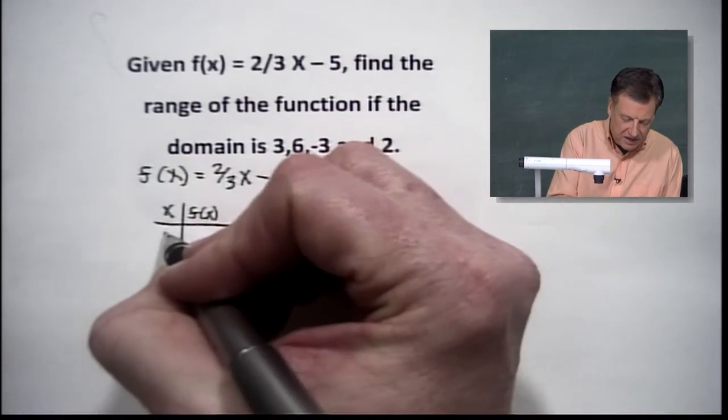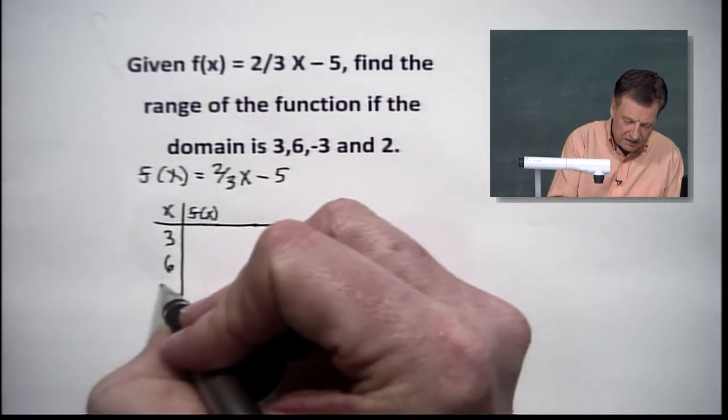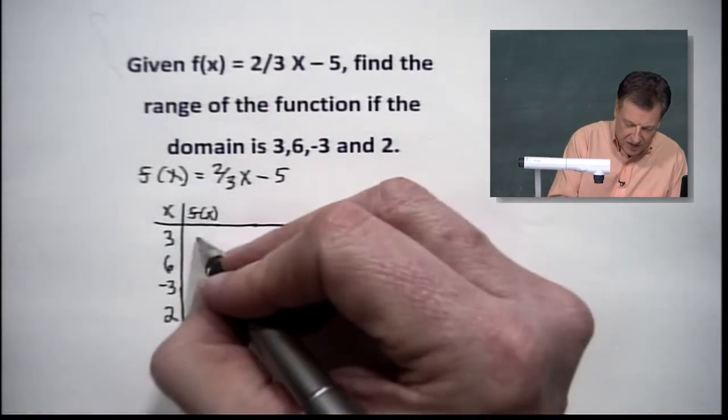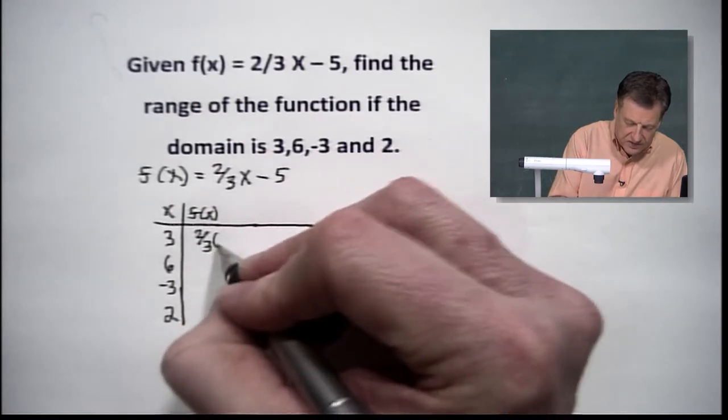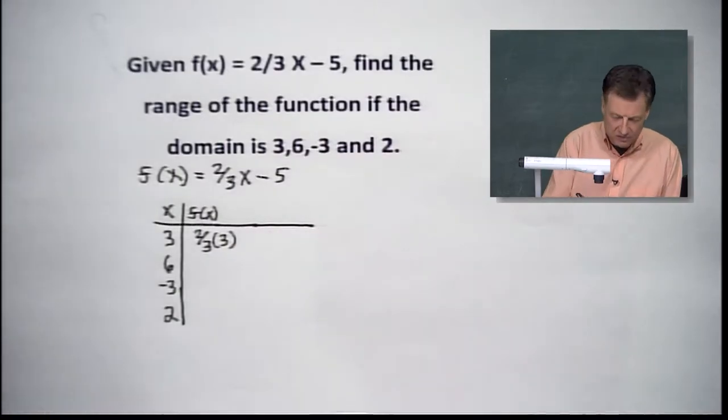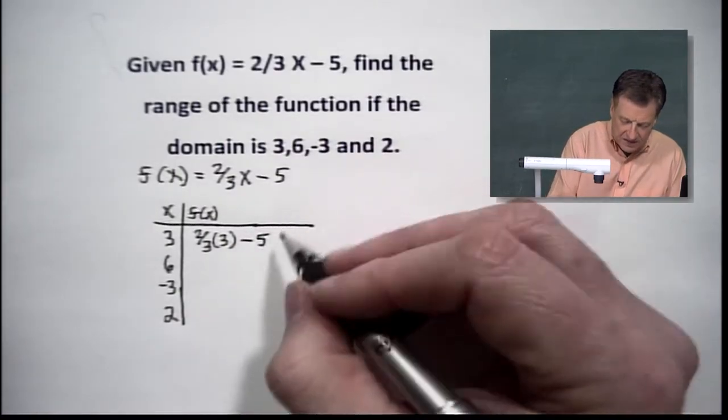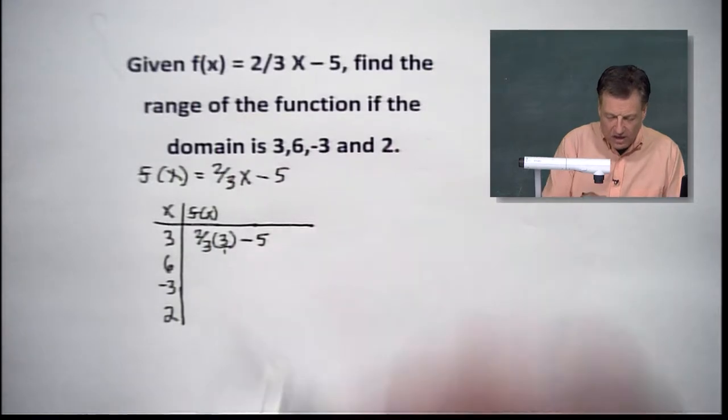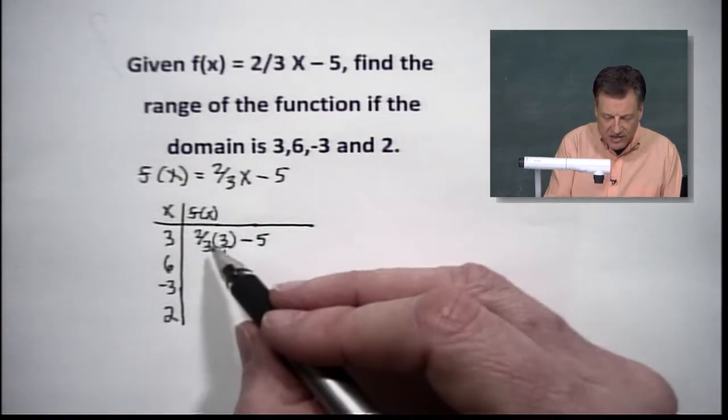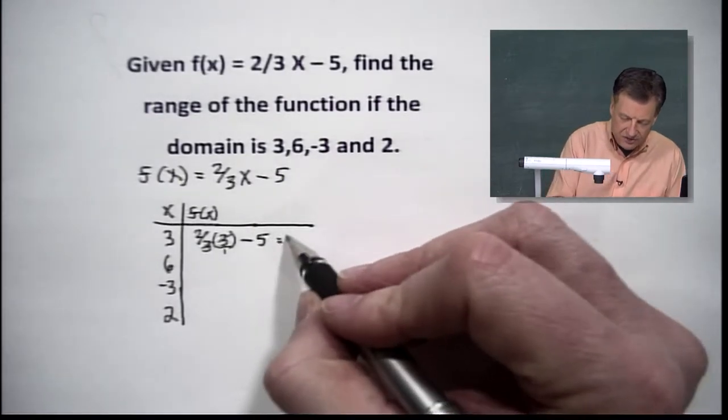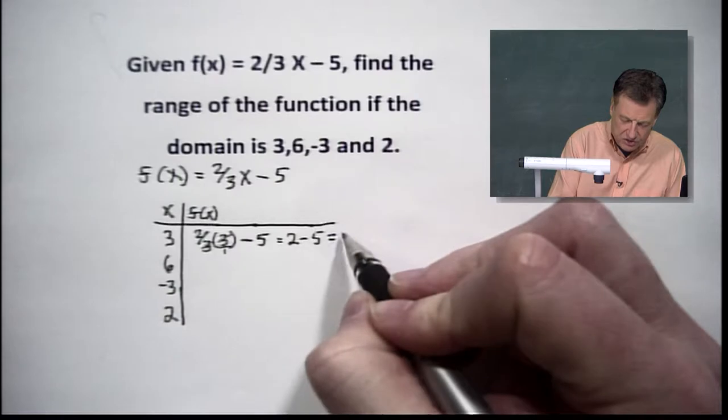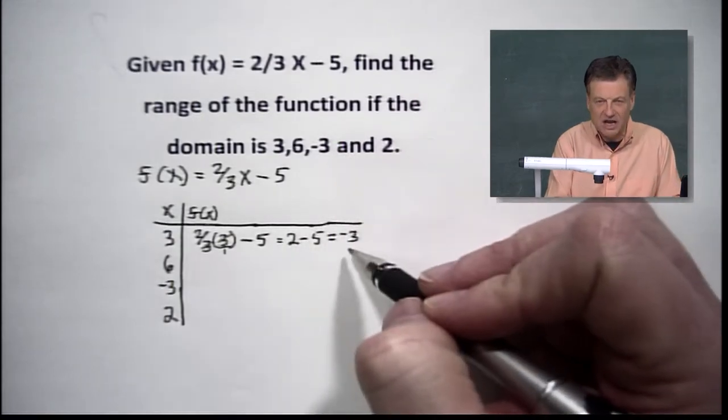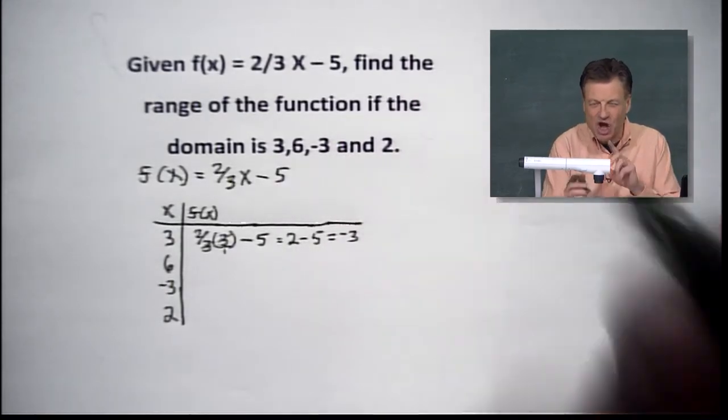First of all, the numbers I've given you, 3, 6, negative 3, and 2. We'll start with two-thirds. We're going to replace the x with a 3, and then we're going to subtract the 5. This is like having a 3 over 1. Your 3s go canceling. You're going to end up with 2 minus 5, which is equal to negative 3. So there's your first member of the range.